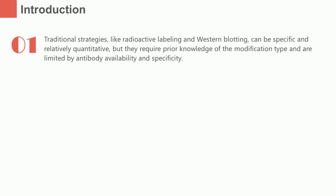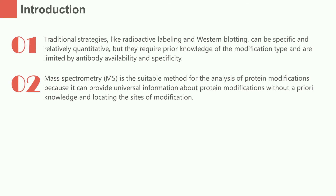For the analysis of protein modification, traditional strategies like radioactive labeling and western blotting can be specific and relatively quantitative, but they require prior knowledge of the modification type and are limited by antibody availability and specificity. Mass spectrometry is the suitable method for the analysis of protein modifications, because it can provide universal information about protein modifications without a priori knowledge and locating the sites of modification.